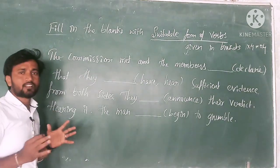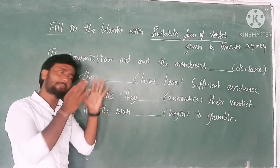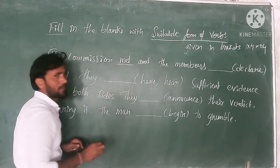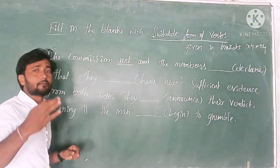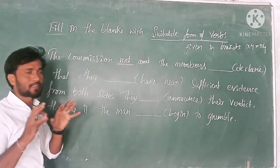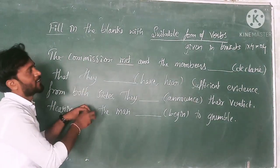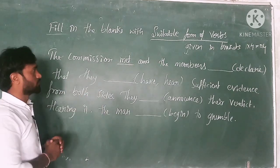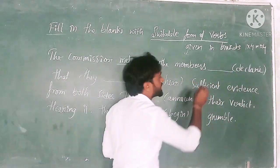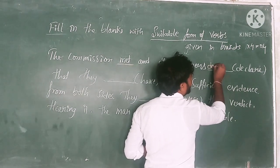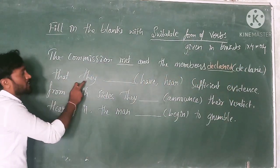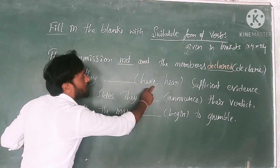We know this story is past tense. Meet becomes met — V1, V2, V3, V4. The story is past, so we fill the blanks with past forms. The commission met and the members declared. That they dash have here — that becomes 'had'.